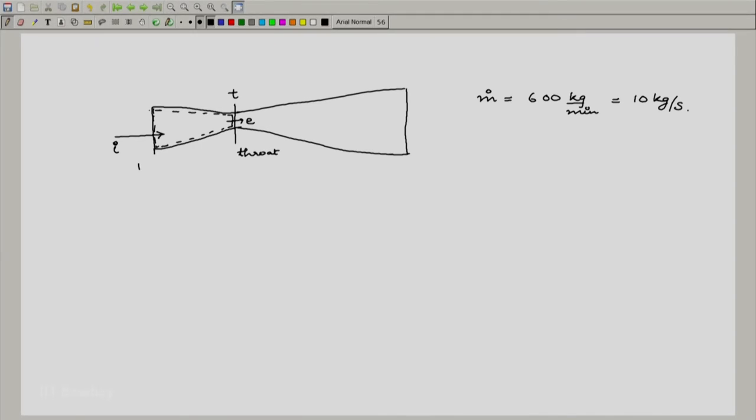The diameter here is given di and the diameter here is given de, it is given as dthroat, which means that Ai can be calculated as π/4 di² and this must be converted to meters. So if it is 6 centimeters this is 0.06 meters. I would not bother about the calculation here. Similarly Ae can be also calculated, e represents throat here.